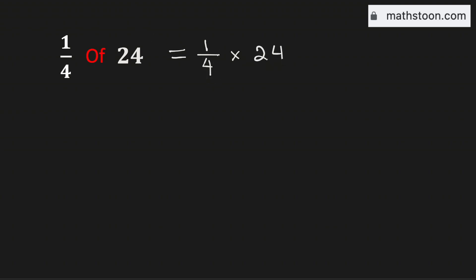Now we know that 4 goes into 24 by 6 times. Therefore, it is just equal to 1 times 6. And this is same as 6.